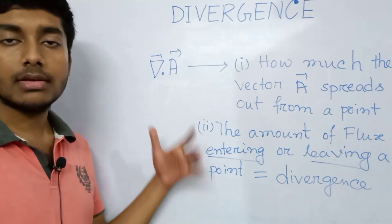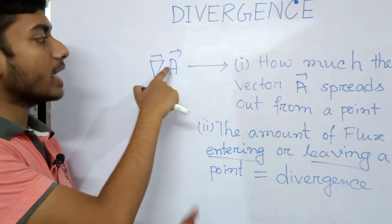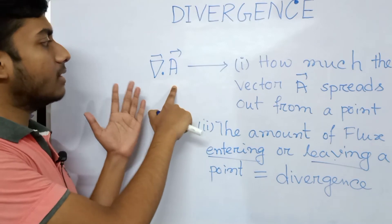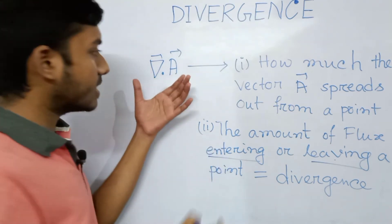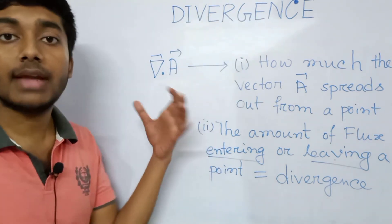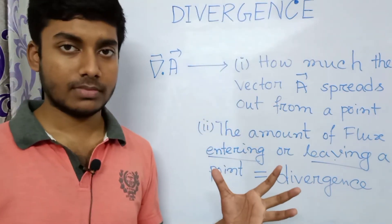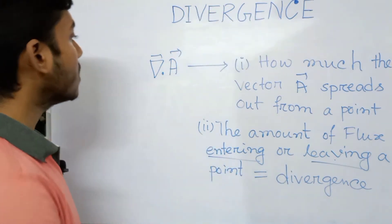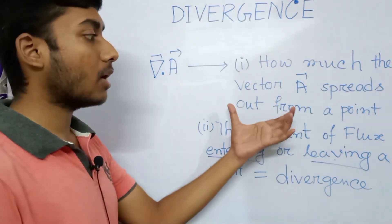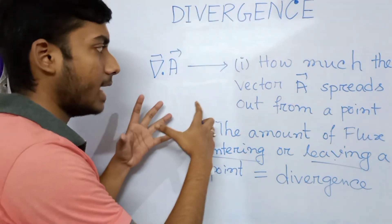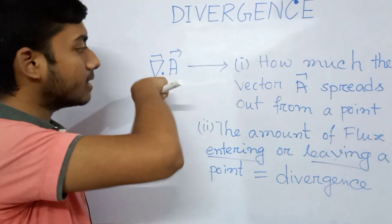Now what does divergence of A signify? Divergence of A is written as del dot A vector. Its significance is hidden inside this name — divergence. Divergence means something that is diverging, that is spreading outside. So divergence of A tells us how much the vector A spreads out from a point.